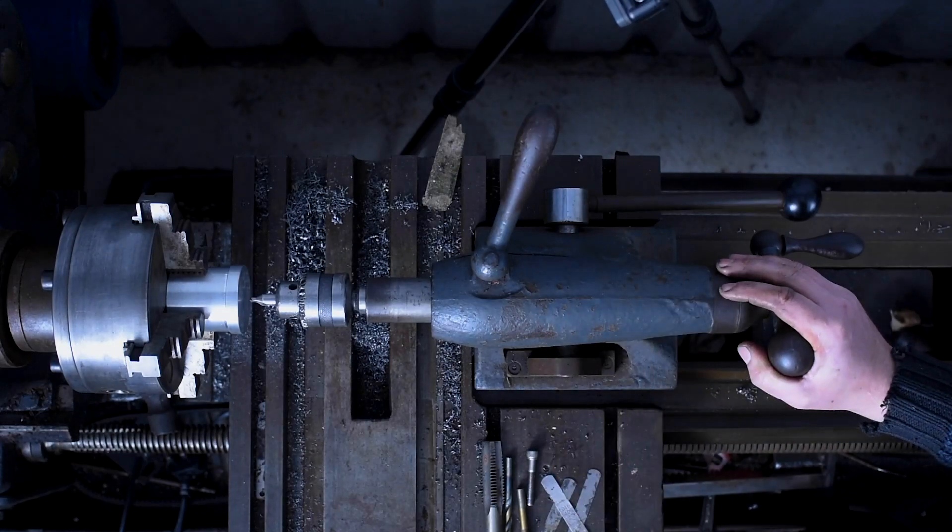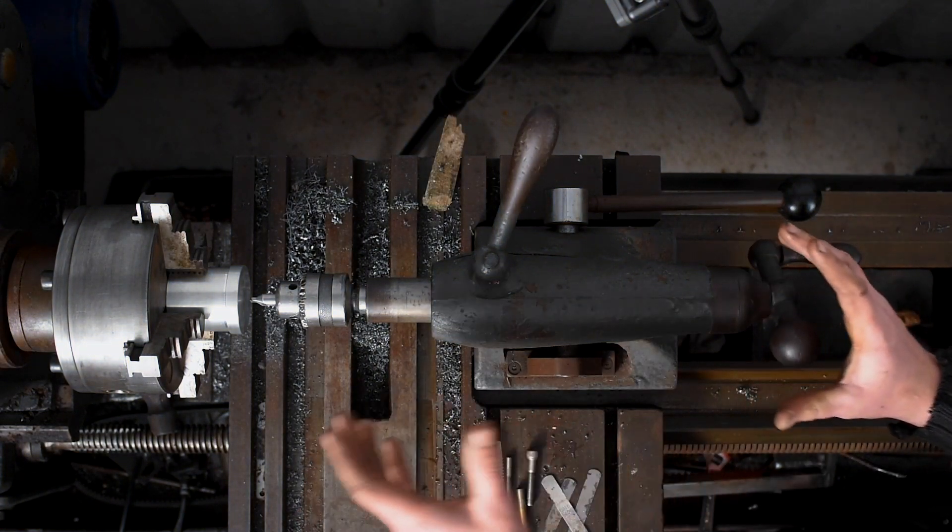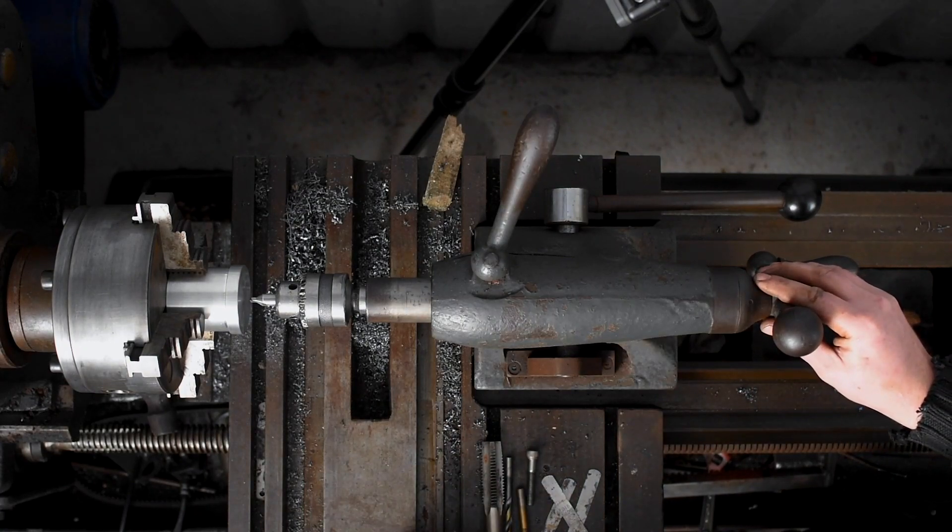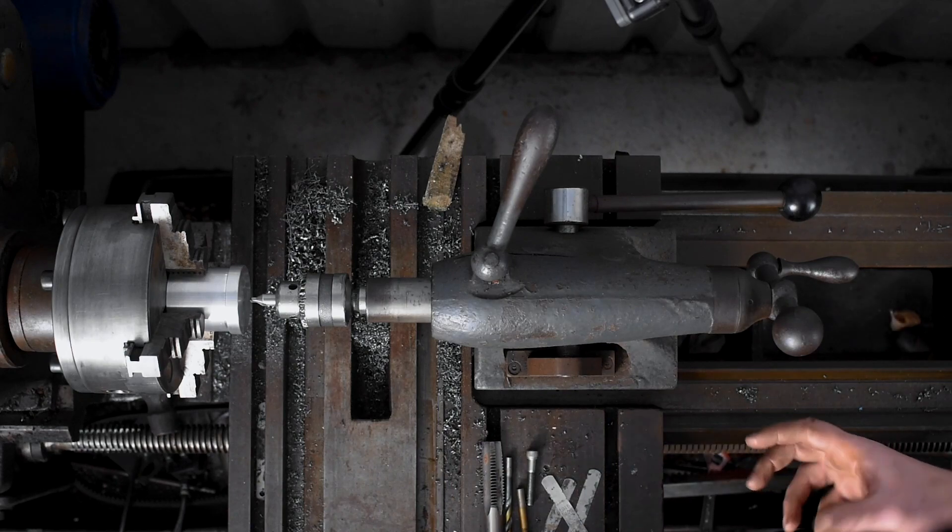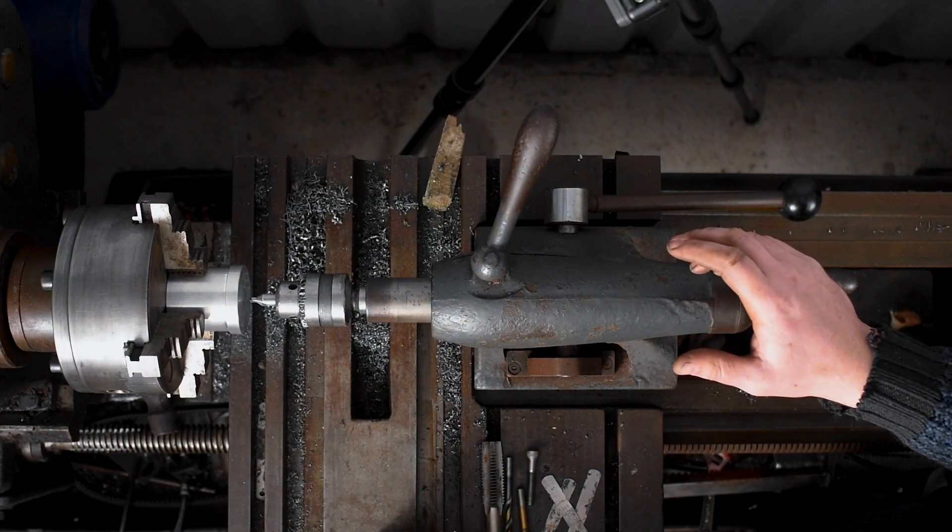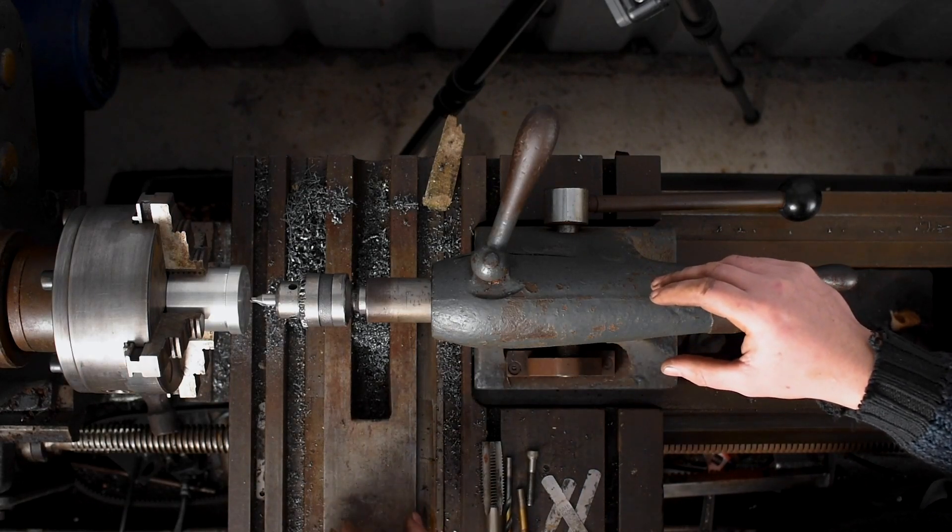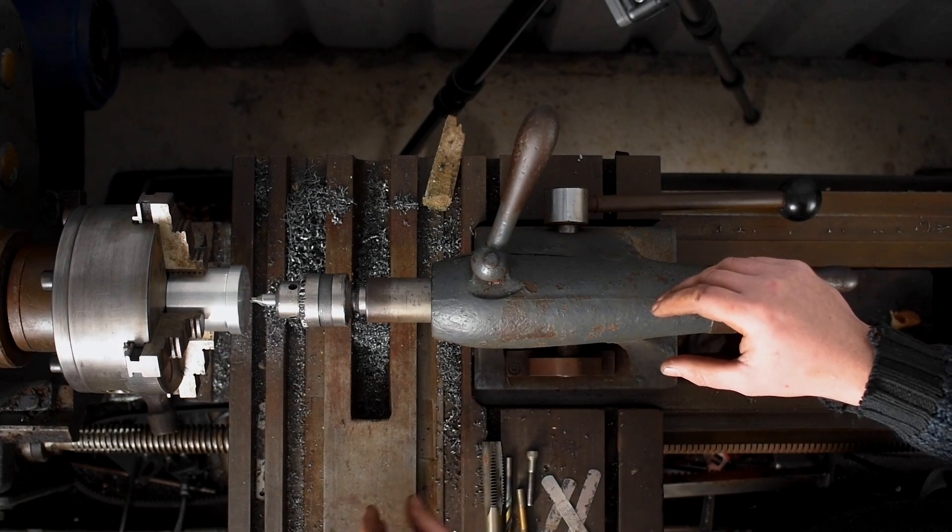Alright, so we're over here at the Colchester now and we're going to use the Colchester to bore out the center of these two bushings. Once we have them bored out up to three quarters of an inch or 19 millimeters, we'll go over to the XL lathe, set it up in the four jaw chuck, and we'll use the boring bar to finish out to the final dimension.